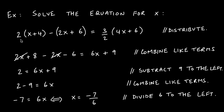Subtraction's inverse operation is addition, and for multiplication we can undo it by dividing, and if we want to undo a division we can multiply. Those four basic principles are essentially all we need to solve these equations. In this question we have a whole bunch of parentheses, so the first thing we can do is distribute to get rid of them.